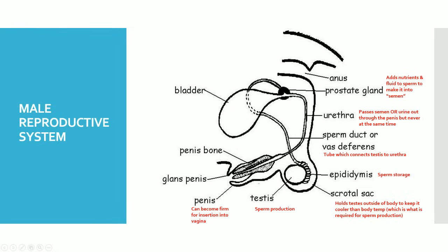Sperm then enters the sperm duct, which carries the sperm to the prostate gland. The prostate gland adds nutrients and fluid to the sperm, and we then start to call it semen, which is a mixture of sperm, nutrients, and fluid. The semen then connects to the urethra, which is also connected to the bladder. The urethra passes either semen or urine out through the penis, but this never happens at the same time.